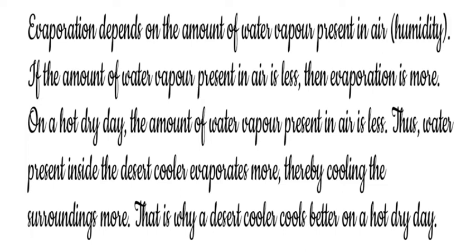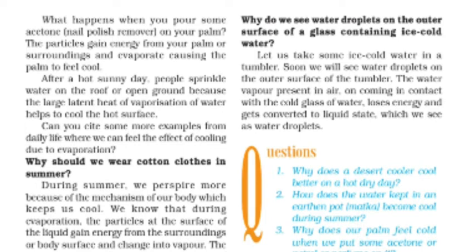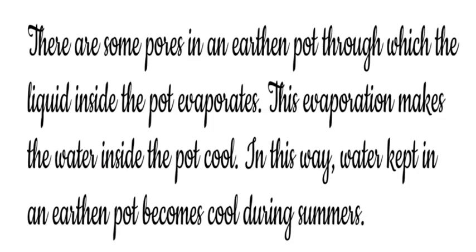How does water kept in an earthen pot become cold during summer? There are some pores in an earthen pot through which the liquid inside the pot evaporates. This evaporation makes the water inside the pot cool. In this way, the water kept in an earthen pot becomes cool during summers.